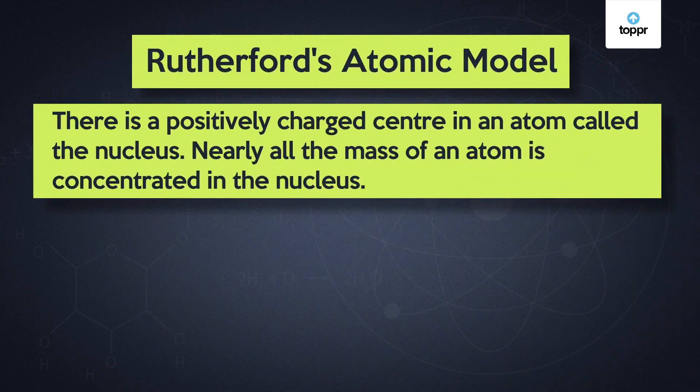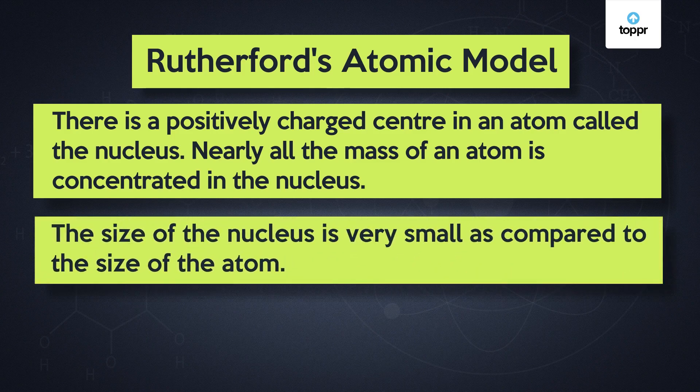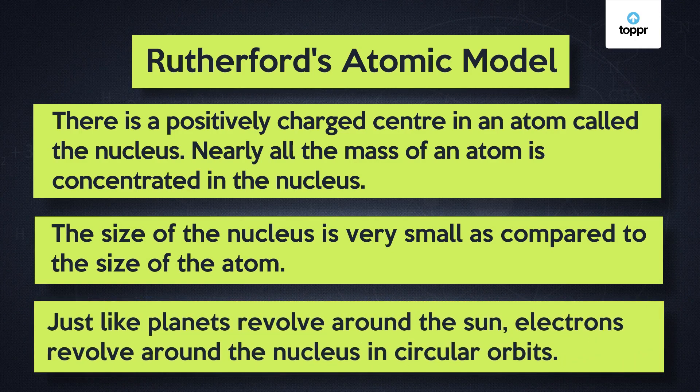Thus, on the basis of his experiments, observations, conclusions, and comparison, Rutherford put forward the nuclear model which had the following features. Firstly, there is a positively charged center in an atom called the nucleus, and nearly all the mass of an atom is concentrated in the nucleus. Secondly, the size of the nucleus is very small as compared to the size of the atom. Finally, just like planets revolve around the sun, electrons revolve around the nucleus in circular orbits.